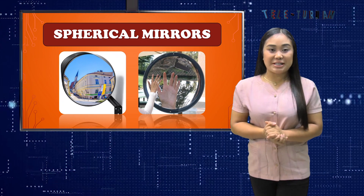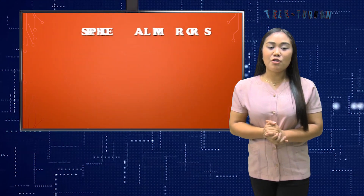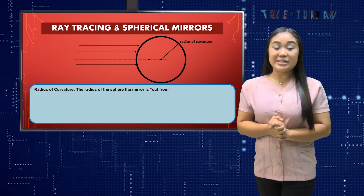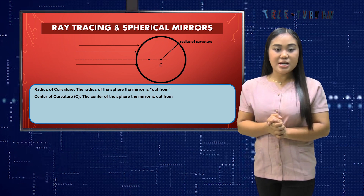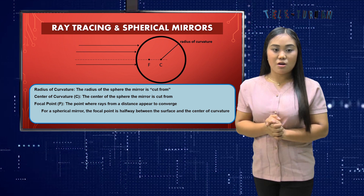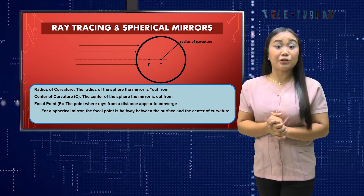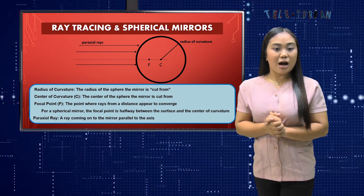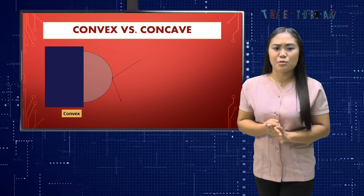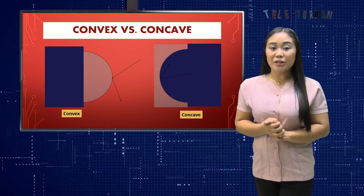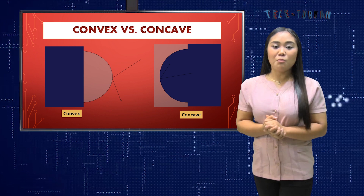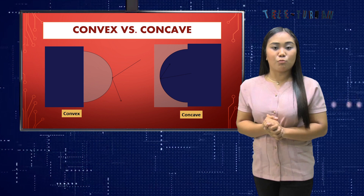We're done with plane mirrors. Let us now proceed to spherical mirrors and ray tracing. The radius of curvature is the radius of the sphere the mirror is cut from. The center of curvature is the center of that sphere. The focal point F is the point where rays from a distance appear to converge. For a spherical mirror, the focal point is halfway between the surface and the center of curvature. Paraxial rays are rays coming on the mirror parallel to the axis. Both convex and concave mirrors obey the same law of reflection, but they make different kinds of images. We can trace the image of an object formed by a spherical mirror by drawing rays emanating from one or more points on the object.